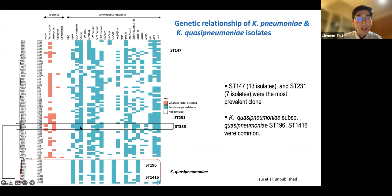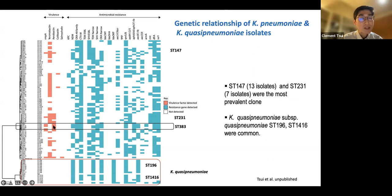We were particularly interested in ST383 because we had only four isolates belonging to it, but they carry both NDM and OXA-48. In terms of virulence genes, those ST383 isolates also carry rmpA and aerobactin, which are very important virulence factors for forming mucoid colonies and causing infections in Klebsiella. So we decided to go deeper into the genomic composition of all these ST383 isolates.